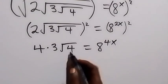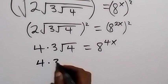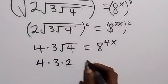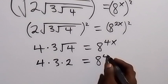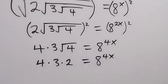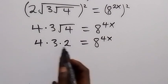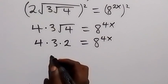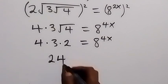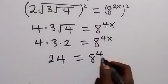Root 4 equals 2, so we can say this is 4 times 3 times 2. In the next step, 4 times 3 times 2 gives us 24, so we have 24 equals 8 raised to power 4x.